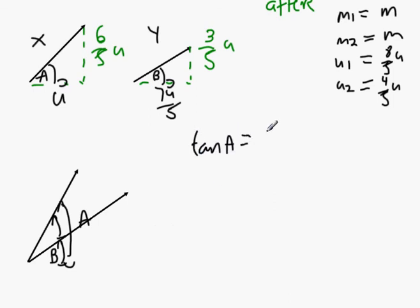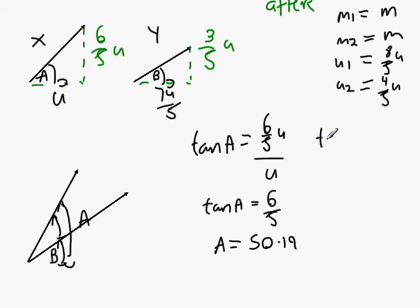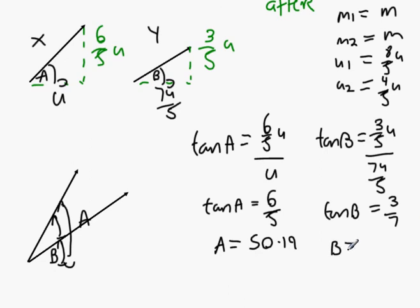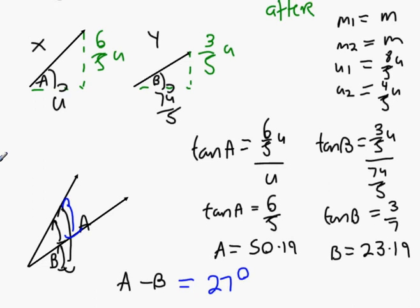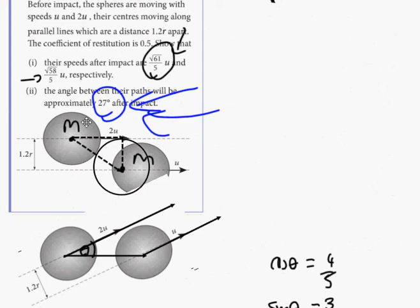Tan A equals 6 over 5U all over U. Can somebody tell me what tan inverse 6 over 5 is? A equals 50.19. And then finally, the other one is tan B, and tan B is 3 over 5U divided by 7U over 5. You can get rid of the U's, and it just should be 3 over 7. What's tan inverse 3 over 7? 23.19. Take A away from B to find the difference in the angles, and what do we get? 27 degrees as predicted.